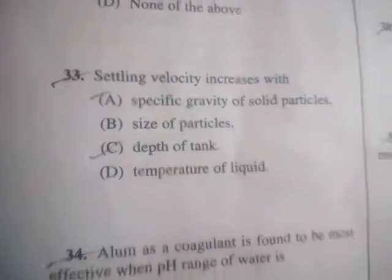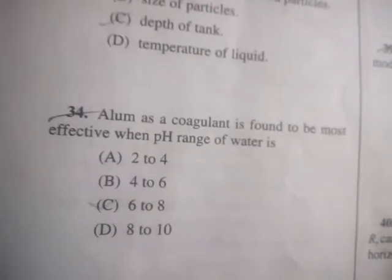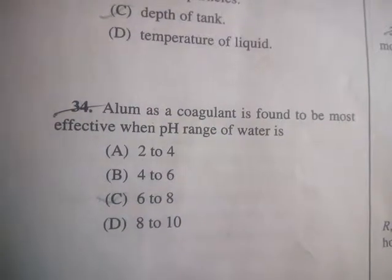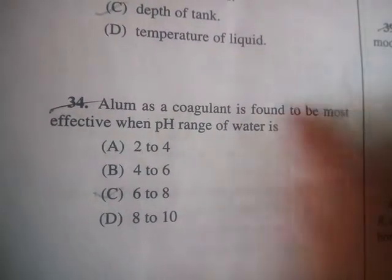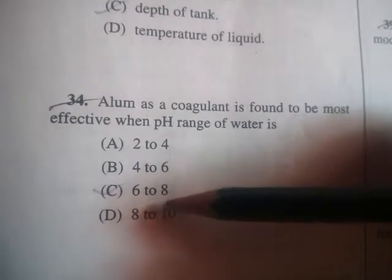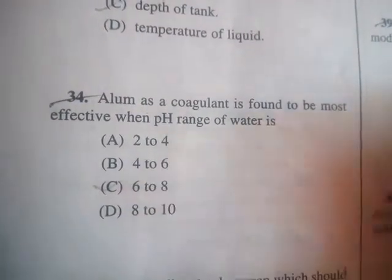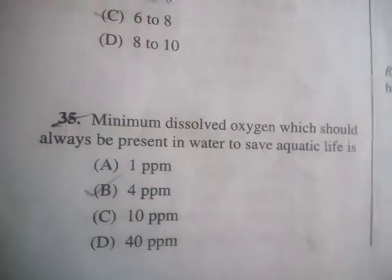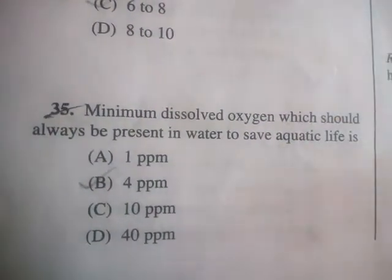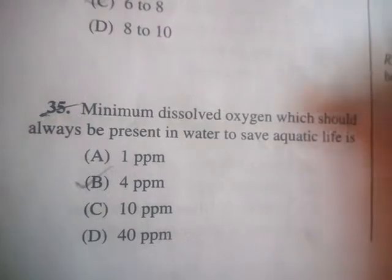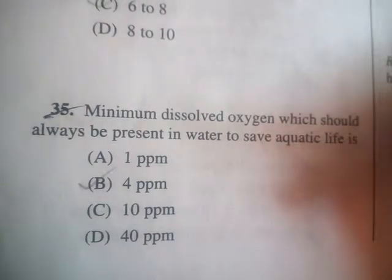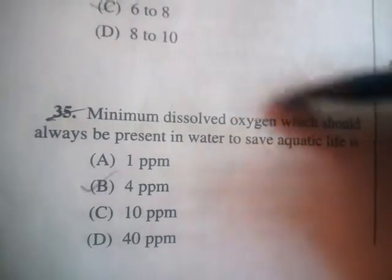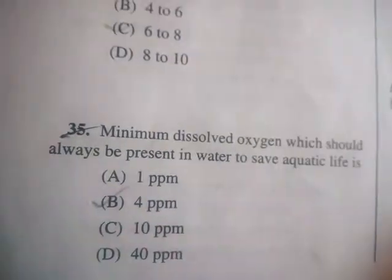Next question: settling velocity increases with — C: depth of the tank. Next question: alum as a coagulant is found to be most effective when the pH range of the water is 6 to 8 — correct answer is C. Next question: minimum dissolved oxygen which should always be present in water to support aquatic life is B: 4 ppm.